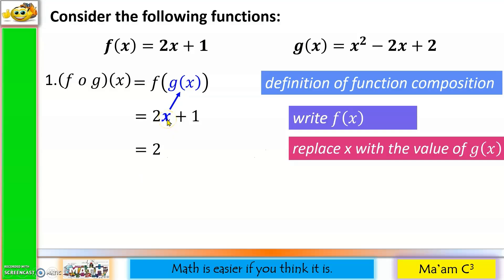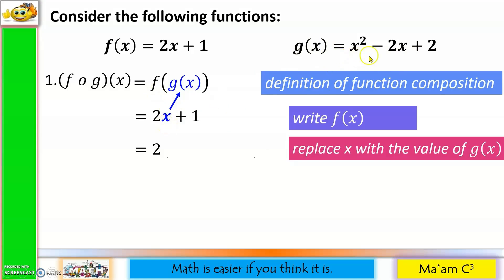Let us replace x with a value of g(x). Our g(x) is x squared minus 2x plus 2. This is the process of putting one function inside another function. So we replace x with x squared minus 2x plus 2, then copy plus 1.